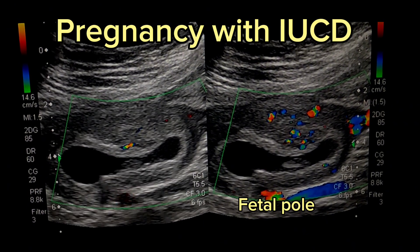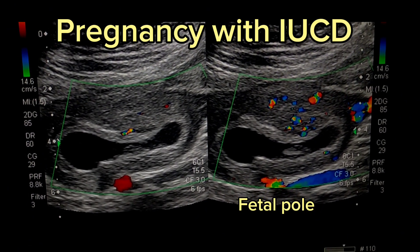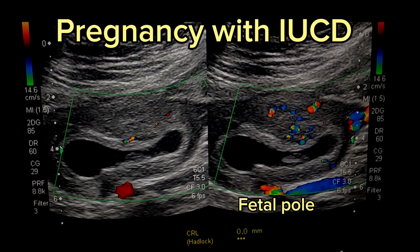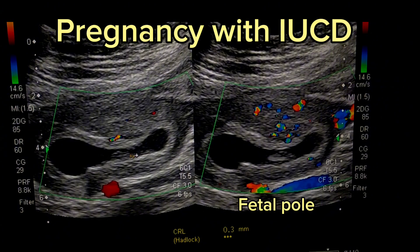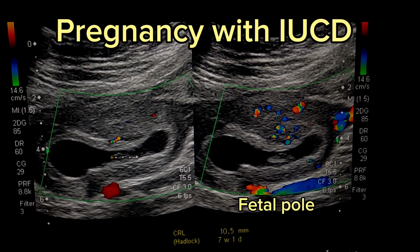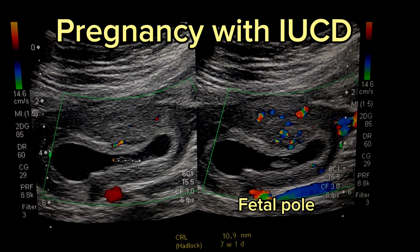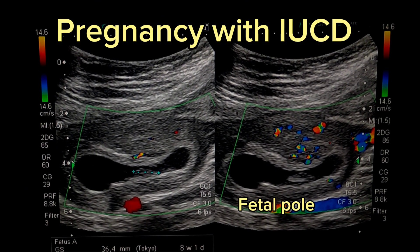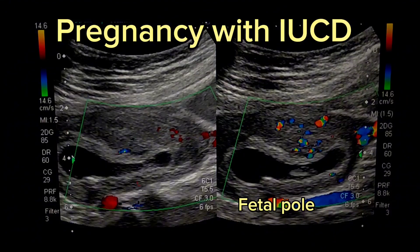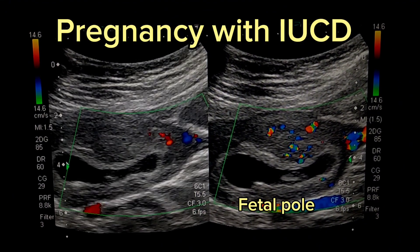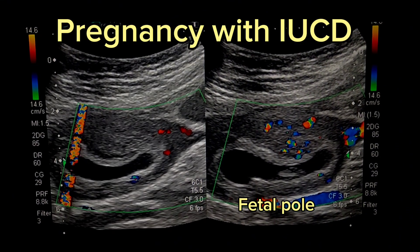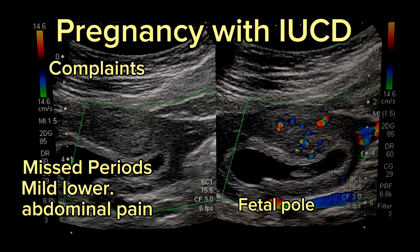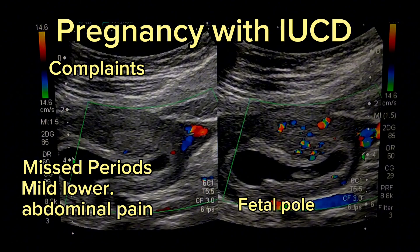As you can see, today's case presentation is co-existence of gestation with an intrauterine contraceptive device. A patient, 28-year-old, gravida 4 and para 3, with a history of IUCD insertion a year prior. Chief complaints were missed periods and mild lower abdominal cramping.